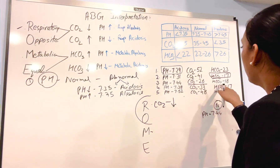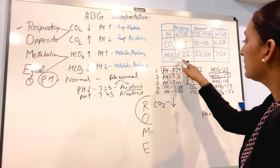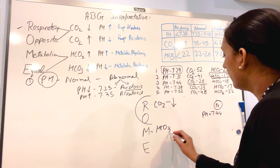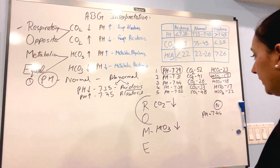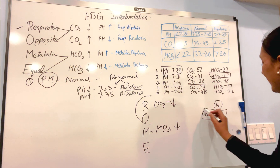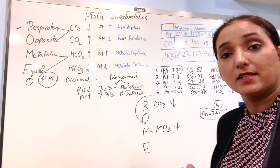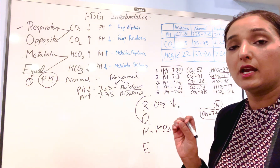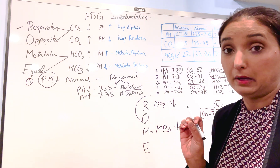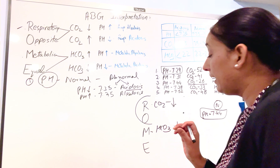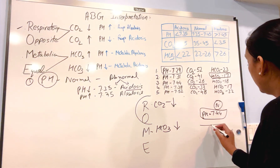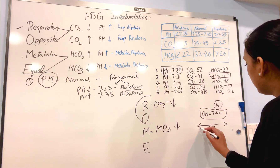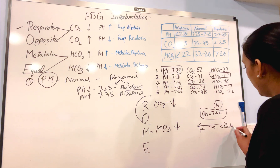Bicarb is 18 — bicarb is also going down. Whether it's acidosis or alkalosis — we take 7.40 as the absolute normal pH of our blood. So going down from 7.40 is acidosis; going high is alkalosis.